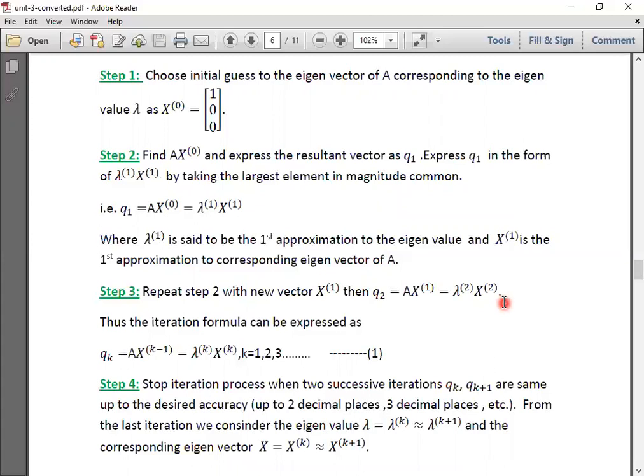We repeat the same process, so that the iteration formula can be: Qₖ equals A times X₍ₖ₋₁₎. A is multiplied with the K minus 1 approximation of X. And this AX is in the form of lambda X, where lambda X is taken as lambdaₖ Xₖ. It means lambdaₖ is the Kth approximation to the eigenvalue lambda, and Xₖ is the Kth approximation to the eigenvector X, where K takes values from 1, 2, 3 and so on. If K is given as 1, then this will be similar to Q₁ equals A times X₀ equals lambda₁ X₁. That we have seen in step 2. If K equals 2, then we get Q₂ equals A times X₁, that equals lambda₂ X₂. That we have seen in step 3 just before. So this is the iteration formula to generate a sequence of approximations to the eigenvector X and its corresponding eigenvalue lambda.